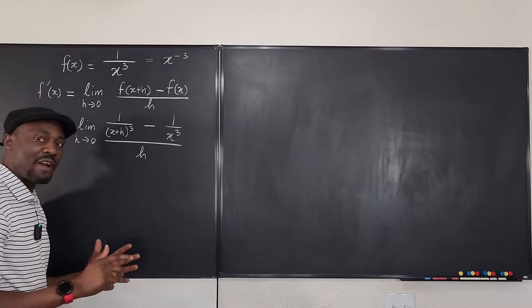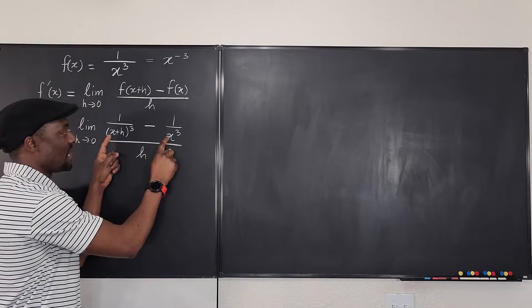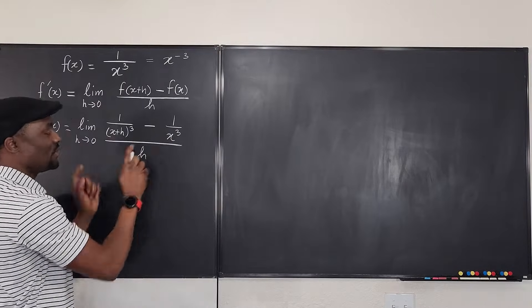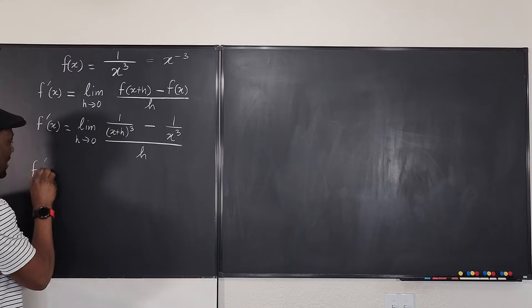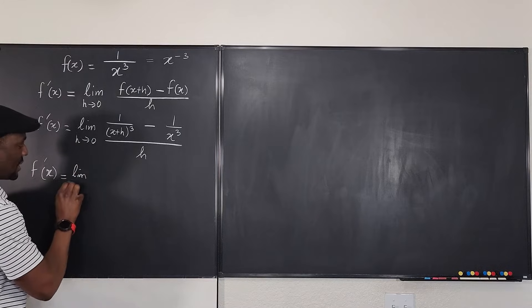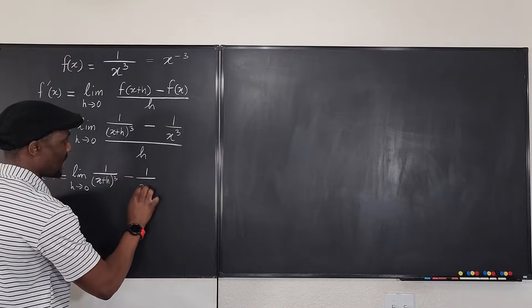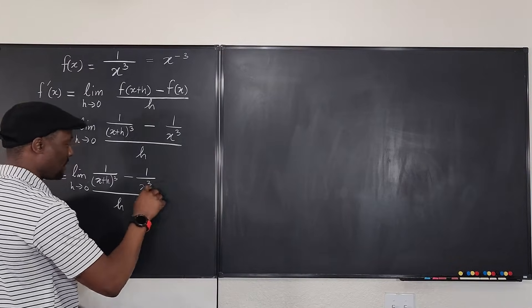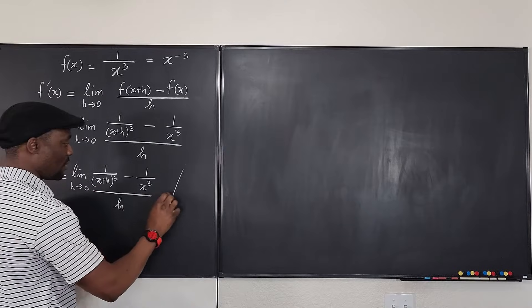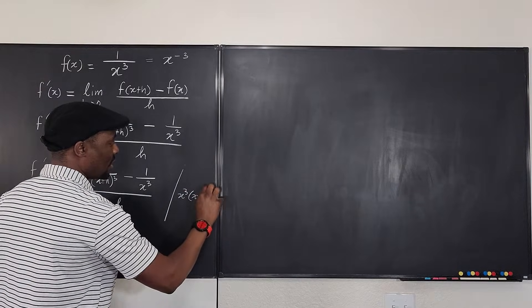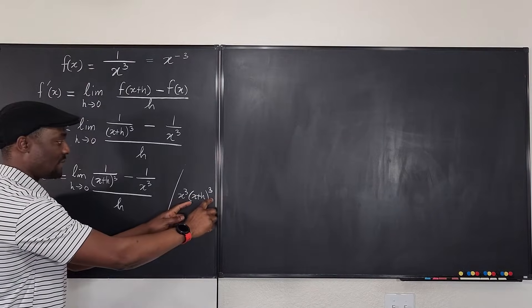In one step, all you have to do is look at all the fractions involved in the complex rational expression. Because the two denominators are not the same, you're going to multiply the top and bottom by both of them. So f prime of x will be equal to the limit as h goes to 0 of (1 over (x+h)³ minus 1 over x³) divided by h, and we're going to multiply the top and the bottom by x cubed times (x plus h) cubed.